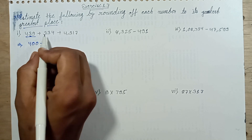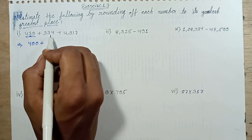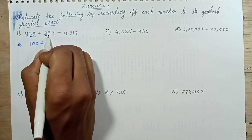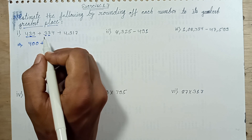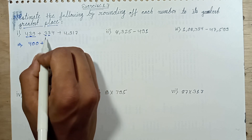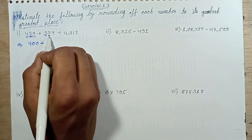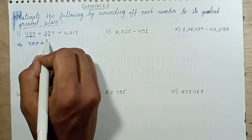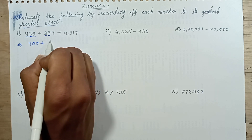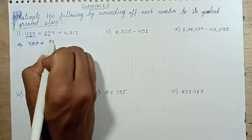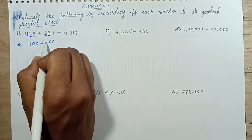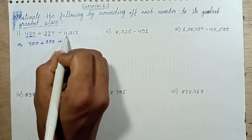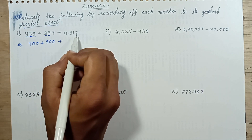Plus 334. The hundreds place digit is 3 and tens place digit is 3. Rounding this number — tens place digit is 3, which is less than 5, so replace with 0. This 4 replaced with 0. The 3 stays in its place. Result: 4,317.